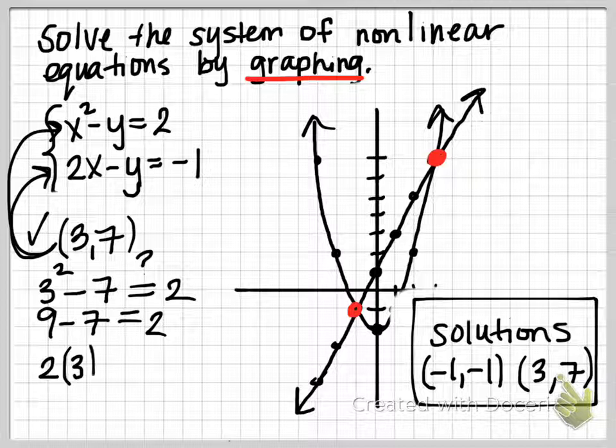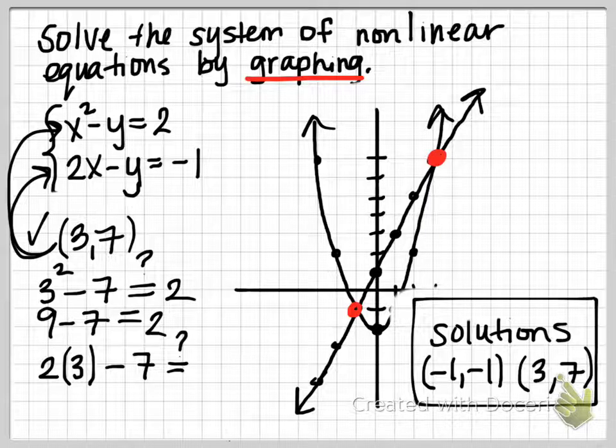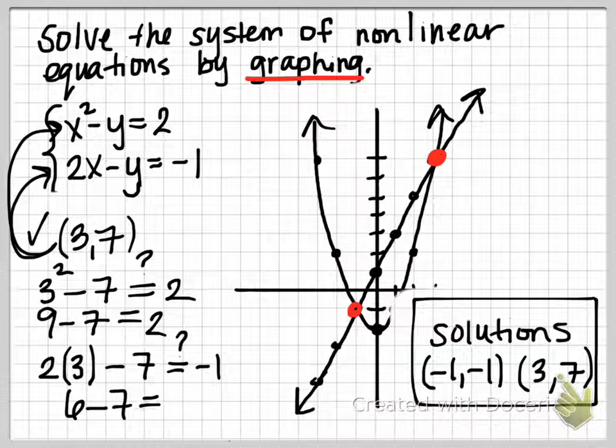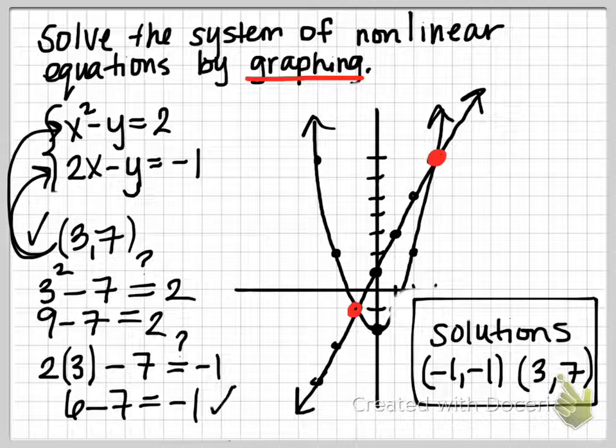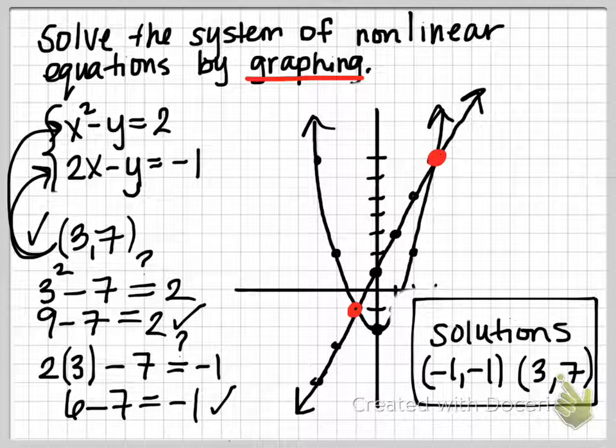Which was 7, and just check to make sure that that equals negative 1. And indeed, 6 minus 7 does equal negative 1, so this coordinate does check out in both equations. Therefore it is a solution.